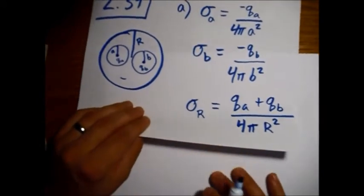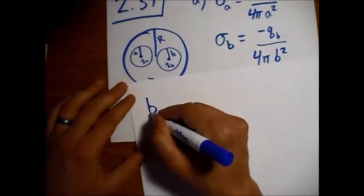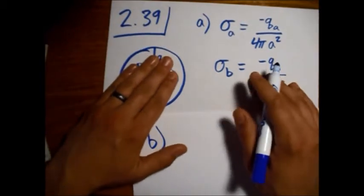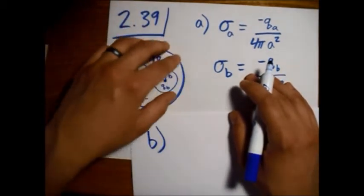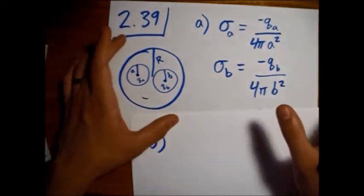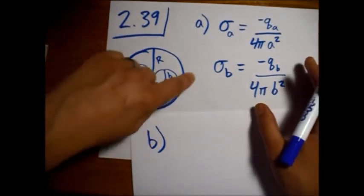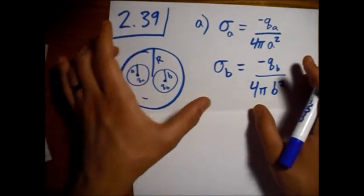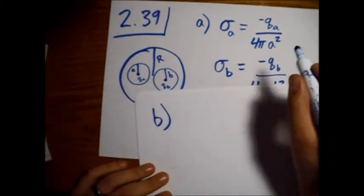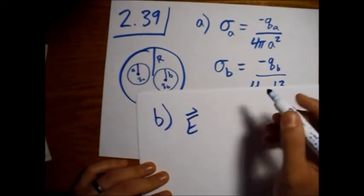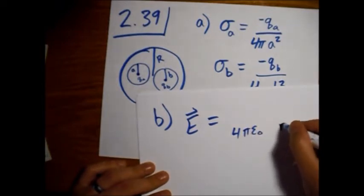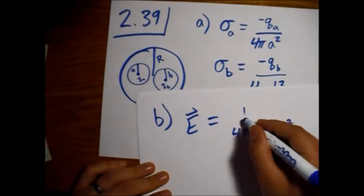Part B. What is the field outside the conductor? Well, just like in problem 2.38, when we have a symmetric, evenly spaced uniform charge density, surface density on a sphere, outside here it will look just like a point charge. So the electric field will just be that of a point charge, 1 over 4 pi epsilon naught R squared.